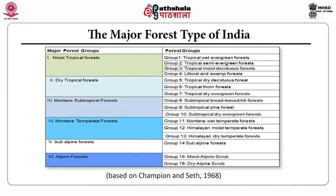Group 8 is sub-tropical broadleaf hill forests. Group 11, mountain wet temperate forests. Group 12, Himalayan moist temperate forests. Group 13, Himalayan dry temperate forests. Group 14, the subalpine forests. Group 15, the moist alpine scrub. And Group 16, the dry alpine scrub.